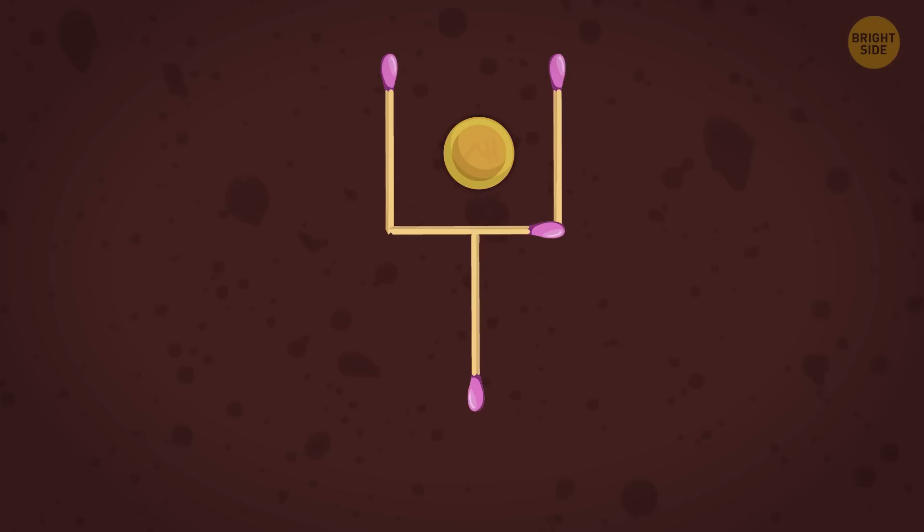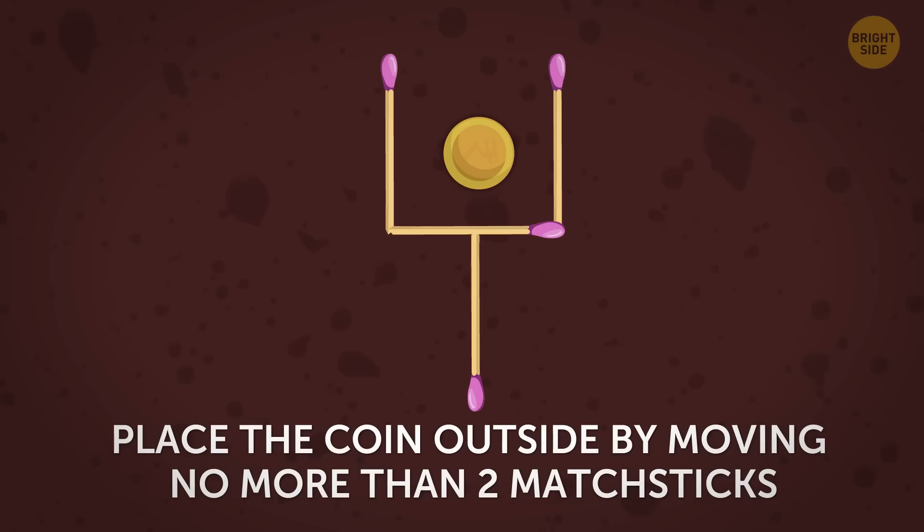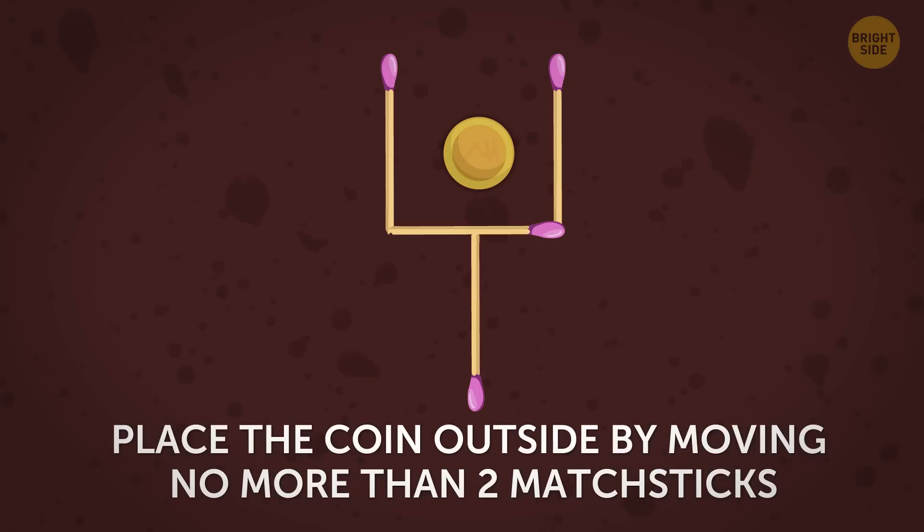The next puzzle will require some additional props for matchsticks. And now let's go ahead and place the coin outside by moving no more than 2 matchsticks. But be careful. You must create the same shape that you started with. Only this time, the coin should be outside of the parallel matchsticks. Try to explore beyond your expectations if you want to solve this mystery. And good luck!